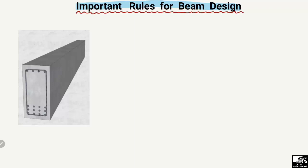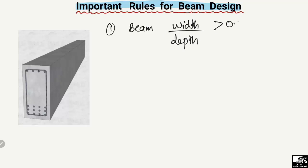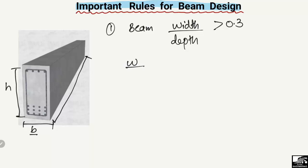Starting from the first rule: the general rule for beam design is that the beam width-to-depth ratio should always be greater than 0.3. If we consider a beam with length, width B, and depth H, then the width-to-depth ratio B divided by H should always be greater than 0.3.